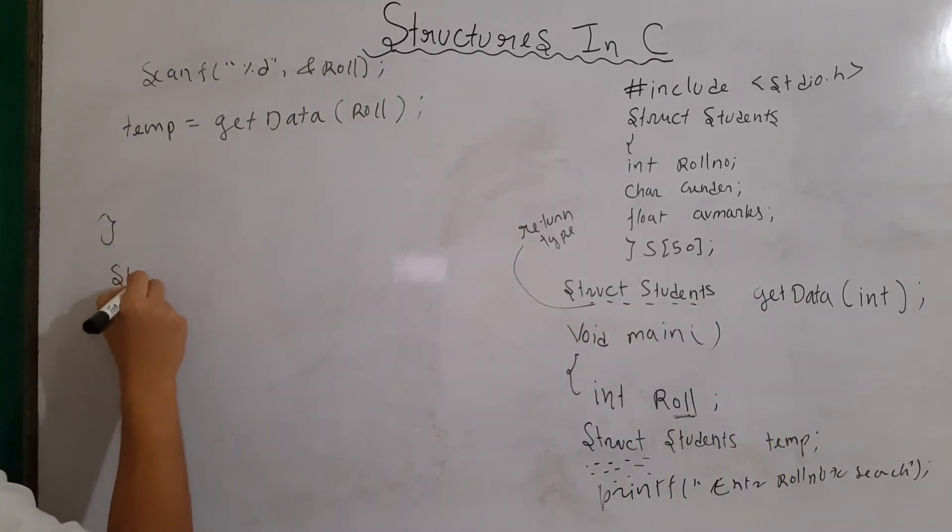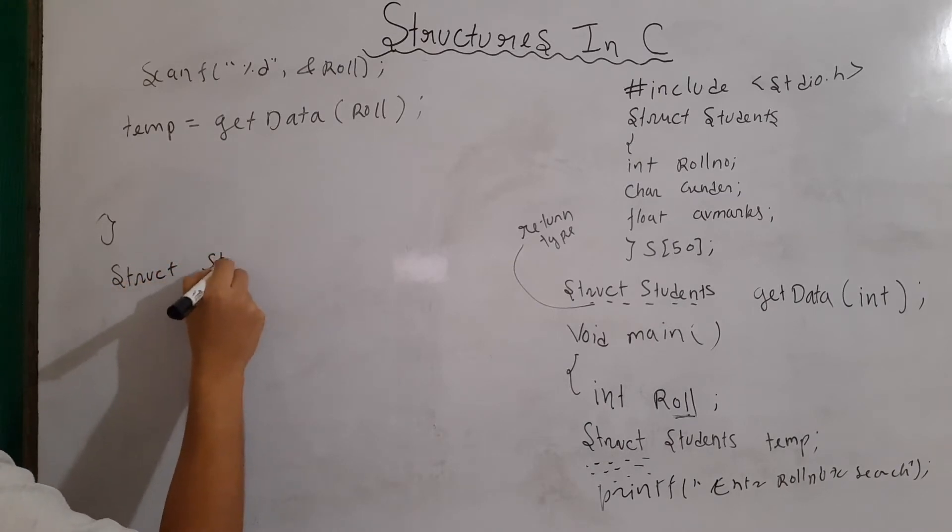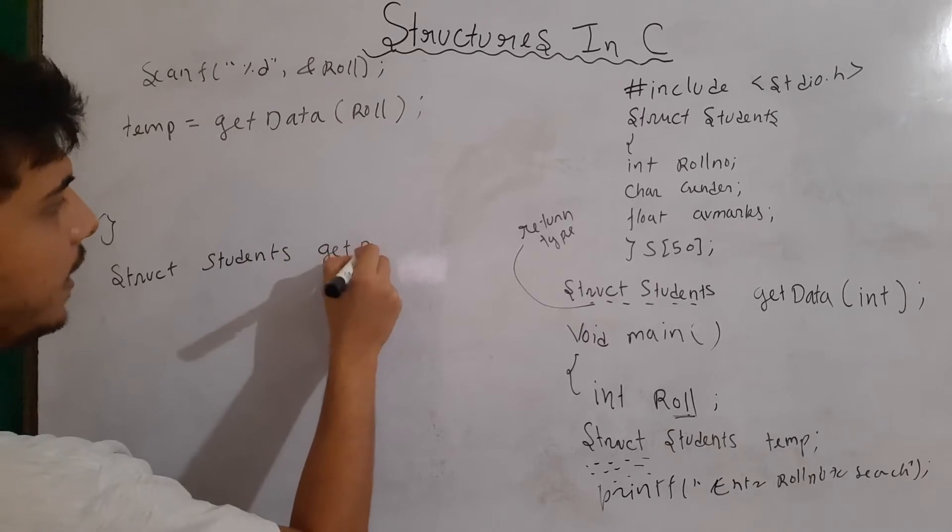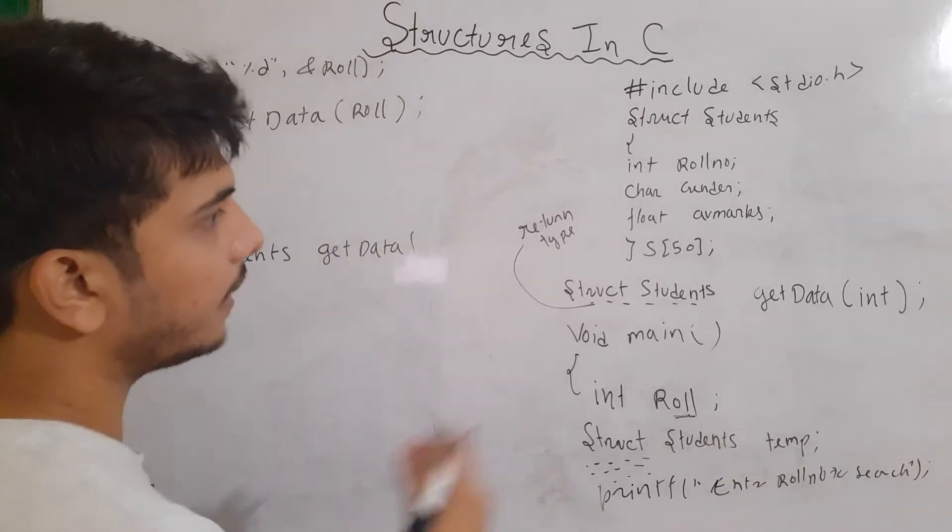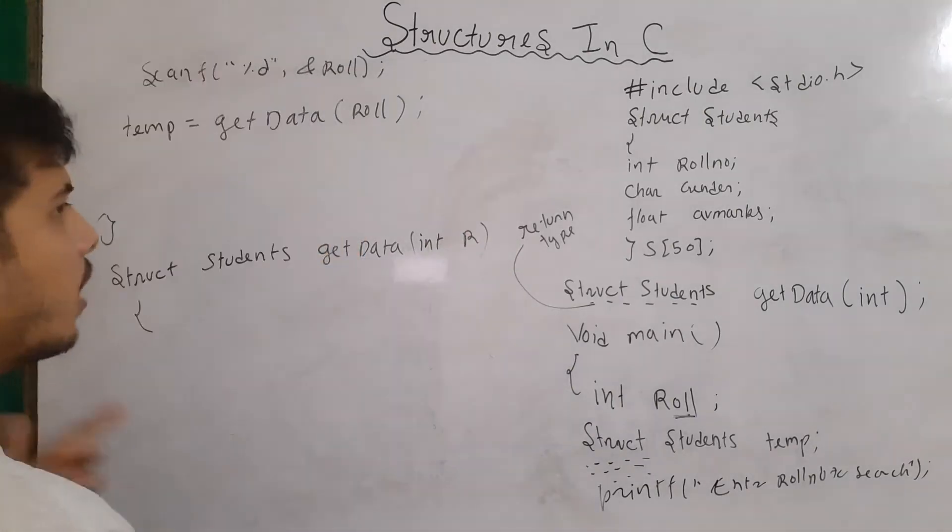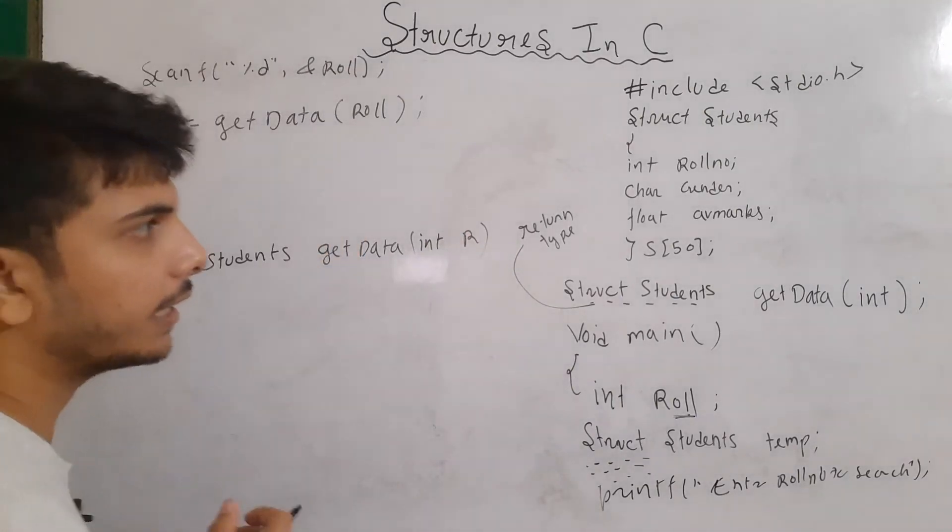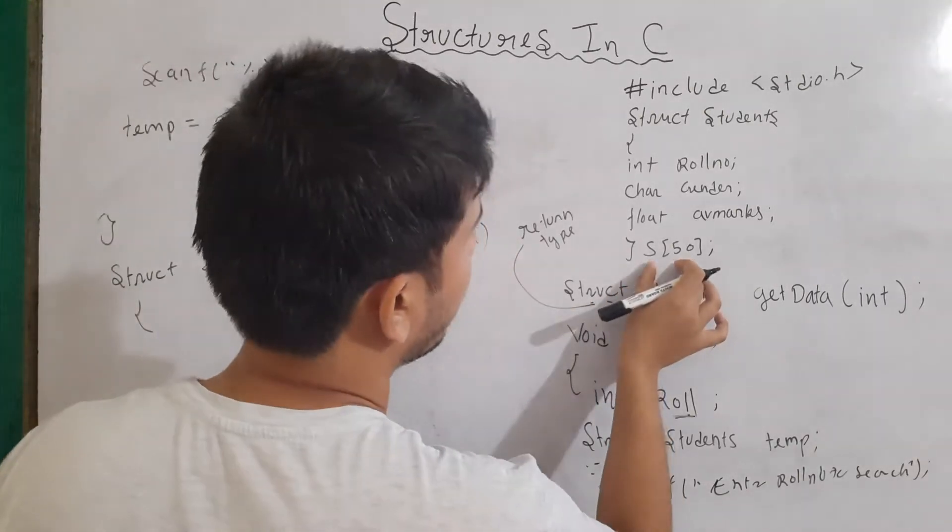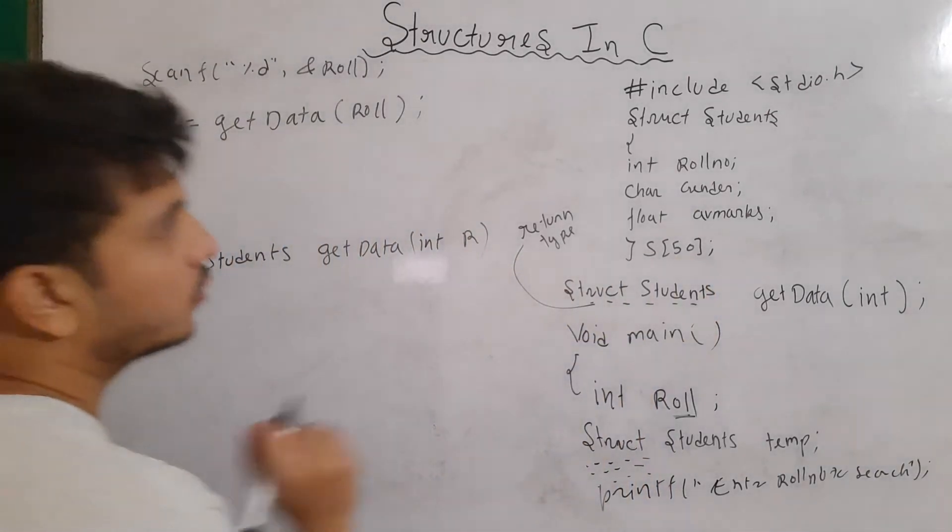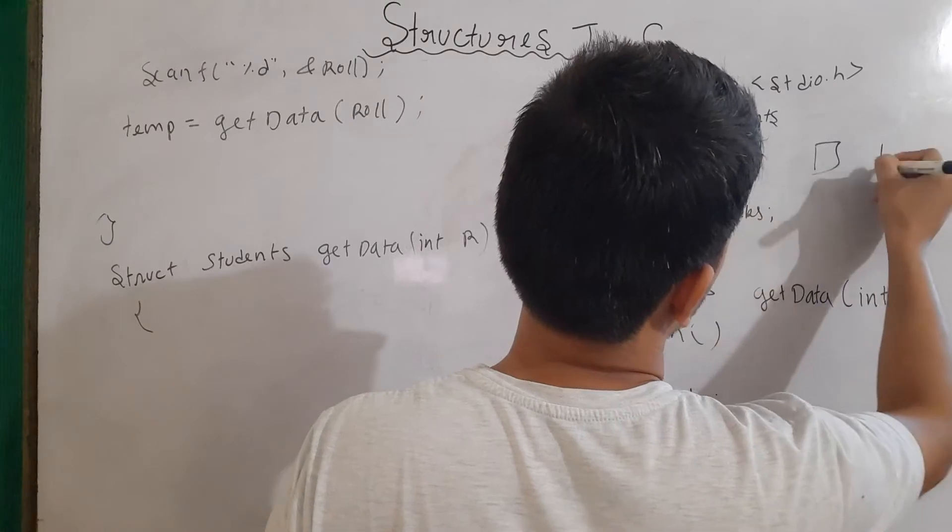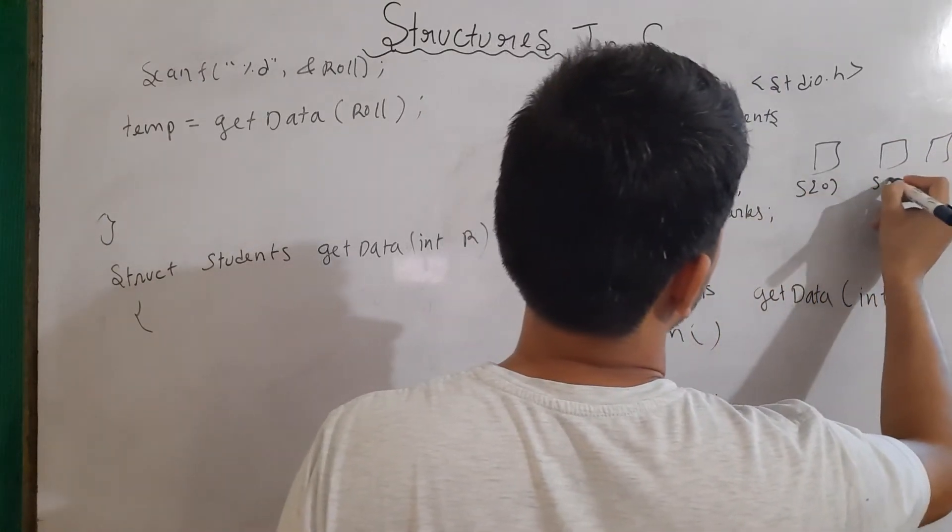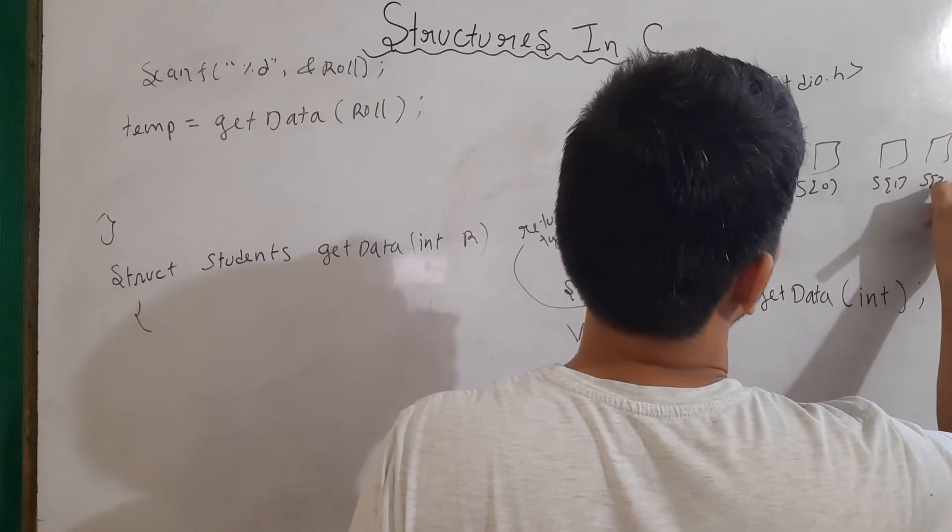Which is struct students and I'll write here get data. And let's say the name of our variable is r. Now, what I need to do, I need to find out that any role number of the students should equal to r or not. So, I can draw something like that.